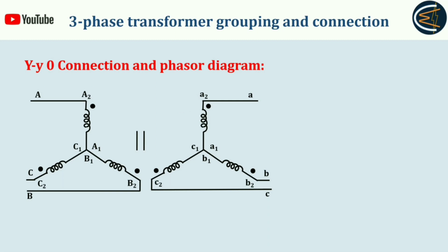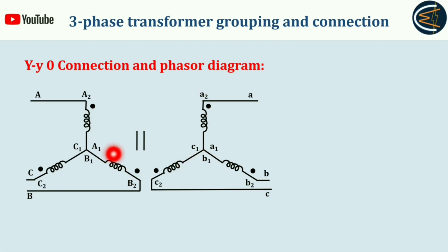For every phase A, B, C, each phase has two terminals: A2 and A1, B2 and B1, C2 and C1. Similarly on the secondary side these are small a to small a1, small b to small b1, and small c to small c1. Now, I have said this is YY0 meaning no phase displacement, but what is the proof? By looking at this circuit diagram you cannot actually prove there is no phase displacement between the line voltages of the secondary and primary sides — for that we need to draw the phasor diagram.